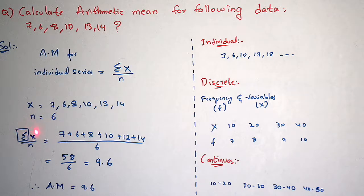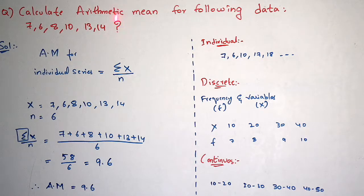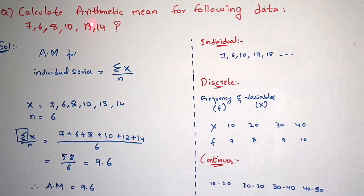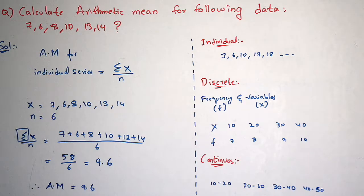Writing the result is very important in examinations — it carries a minimum of two marks. So for the question 'calculate arithmetic mean for the following data,' you have to write: the arithmetic mean for the following data is equal to 9.6. This is about arithmetic mean in individual series.